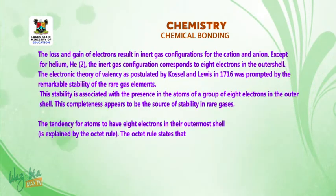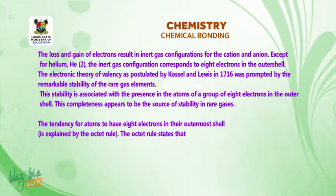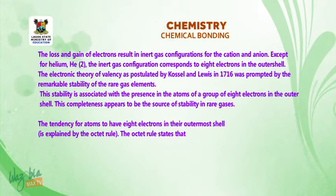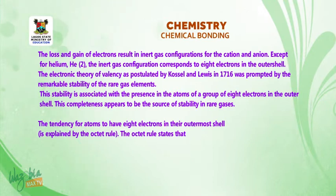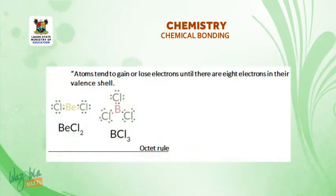The loss and gain of electrons results in inert gas configuration for cation and anion. The inert gas configuration corresponds to eight electrons in the outer shell. The electronic theory of valency as postulated by Kossel and Lewis in 1916 was prompted by the remarkable stability of the noble gas elements. This stability is associated with a group of eight electrons in the outer shell. The tendency for atoms to have eight electrons in the outermost shell is explained by the octet rule. The octet rule states that an atom tends to gain or lose electrons until there are eight electrons in their valence shell.